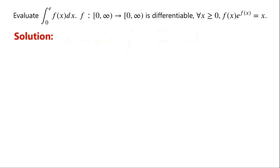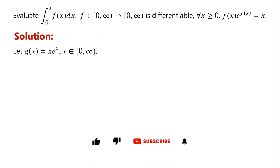It seems not easy. Although we don't know the specific functional form of f of x, the given equation implies that f of x is a part of the Lambert W function, which is related to x times e to the power of x. So we let g of x equal x times e to the power of x, where x is a non-negative number.